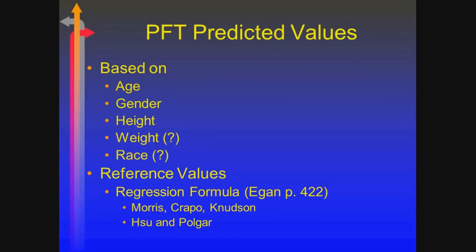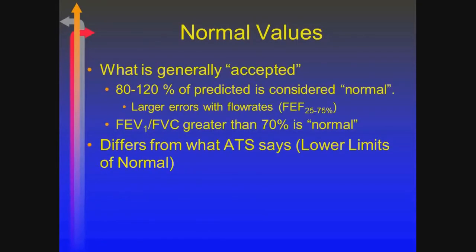If you're really into it, you can go into Egan and look at the regression equations to determine for any value what the predicted value should be. On the adult side, Morris, Crapo, and Knudsen are the three primary ones we use. Crapo is the one associated with the Mormon population in Utah for the predictives. Sue and Polk are pediatric reference values. We'll go with 80% to 120% as considered normal, with the exception of FEV1/FVC being greater than 70%.